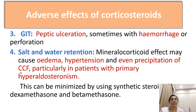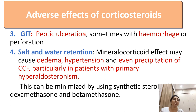Peptic ulcer formation occurs in the gastrointestinal tract. Sometimes it becomes hemorrhagic due to decreased local immune response against H. pylori infection, and inhibition of prostaglandin as well as pepsin secretion, which aggravates peptic ulcer.